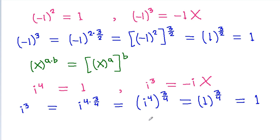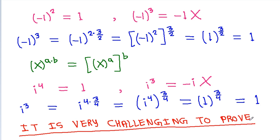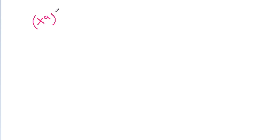So, can you prove that why it is wrong? It is very challenging to prove. You might say that x power a, whole power b, is equal to x power a times b, if a and b are integers.